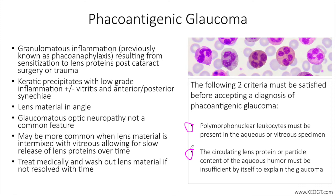From a treatment standpoint, phacoantigenic glaucoma is treated with topical therapy to lower intraocular pressure as well as steroids to control inflammation. While it is possible for the disease process to resolve with topical therapy alone, removal of the lens protein, when significant, will both speed up recovery as well as result in definitive treatment.